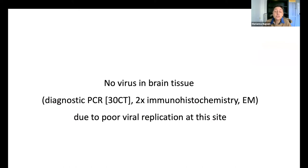We then looked if it was possible to see virus in the brain. We used diagnostic PCR of brain samples, two kinds of immunohistochemistry, and electron microscopy. But we were never able to find the virus in any of these brains. This is probably due to the fact that even if it's present, it has very poor viral replication in the brain. Some people could find it using diagnostic PCR with up to 200 cycles — far more than what we use nowadays for regular diagnostics. But the most important characteristic of COVID-19 is the inflammation: the response to the virus.